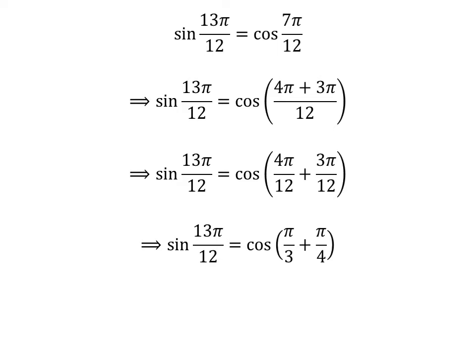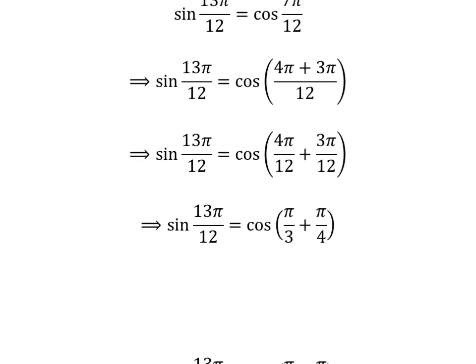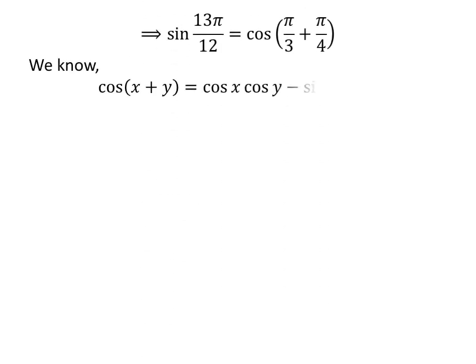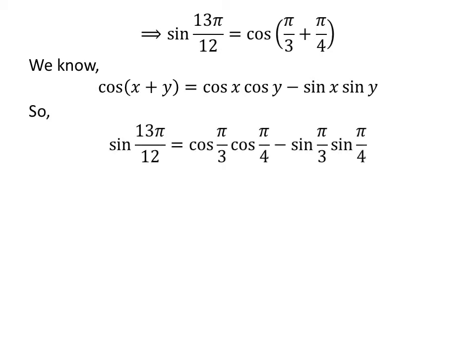Following the above steps we get sine of 13 times pi upon 12 is equal to cosine of pi upon 3 plus pi upon 4. We know cosine of x plus y is equal to cosine of x times cosine of y minus sine of x times sine of y. Sine of 13 times pi upon 12 is equal to cosine of pi upon 3 times cosine of pi upon 4 minus sine of pi upon 3 times sine of pi upon 4.